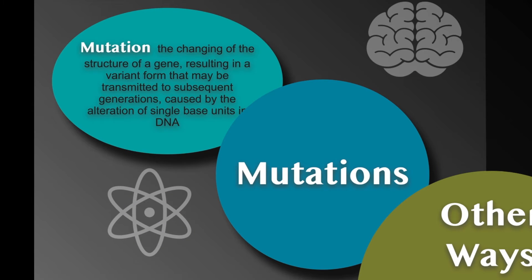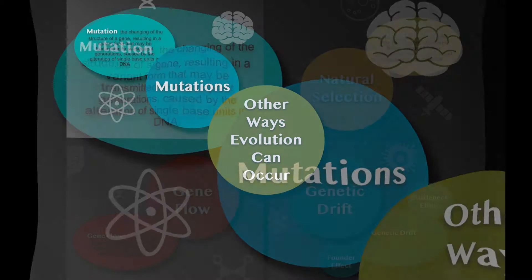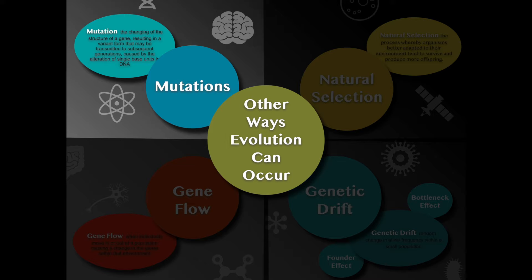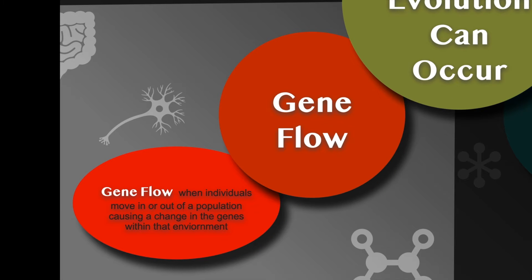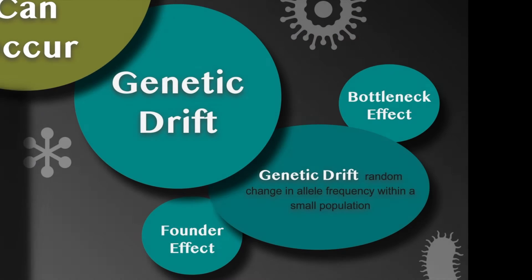Mutations introduce new alleles into the population. A mutation is the changing of the structure of a gene resulting in a variant form that may be transmitted to subsequent generations, caused by altering the base pairs within the DNA. Mutations and natural selection can work hand-in-hand. Gene flow occurs when individuals move in or out of a population and cause change to the genes within an environment.